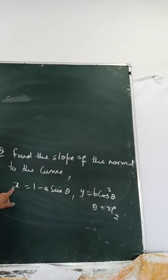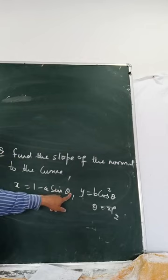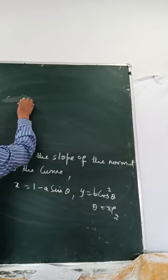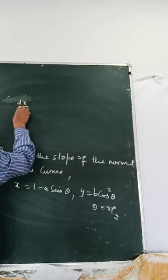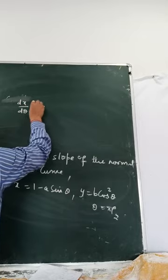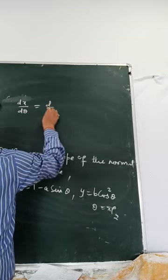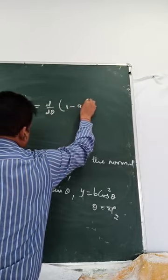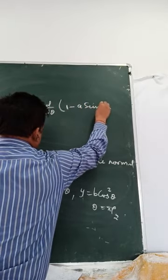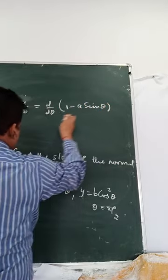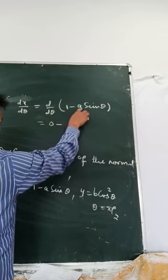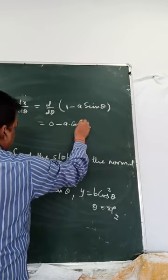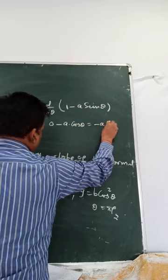Since x is a function of theta, we find dx by d theta equals d/d theta of 1 minus a sine theta, which gives 0 minus a cos theta, that is minus a cos theta.